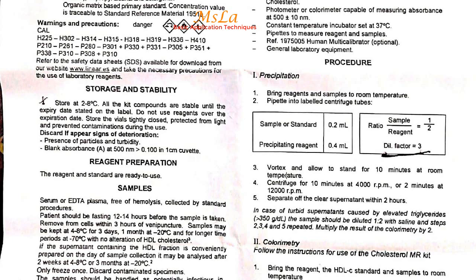If the test result exceeds the upper limit, multiply by 10 to get the final value in mg per deciliter. For sample dilution, perform a 1:2 dilution with normal saline, then multiply the result by 2.